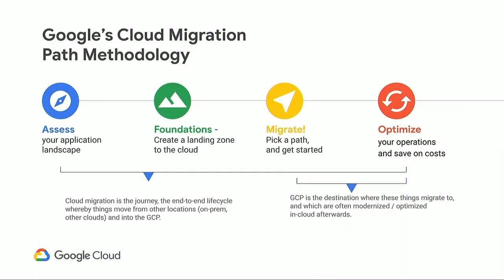Let's go 10,000 feet up in the air and take a look at migrations. Migration is a journey, and the journey always starts with a careful and thorough assessment of the environments you want to move. Then you do what we call cloud foundations — networking preparations, identity management, project and organizational structure — and then there's the task of actually moving your workloads into GCP, and then you optimize.